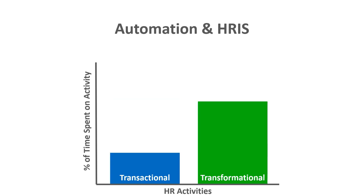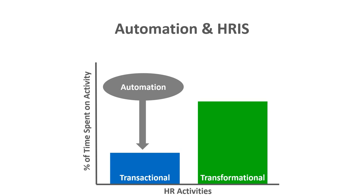Today we've seen a shift where more time is being spent on transformational activities, especially in HR, because many activities that were transactional in nature and historically had to be done by a human are now being automated by HRIS and other forms of technology. A good example is benefits enrollment: it used to require sitting down with a benefits specialist to fill out forms, which was very time-consuming. Today, self-service benefits portals allow individual employees to fill out forms online and only reach out to HR if they have questions.